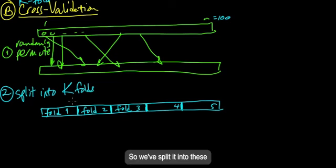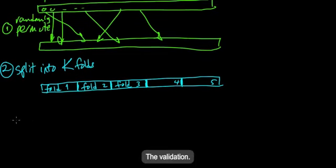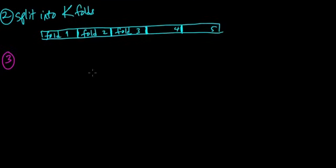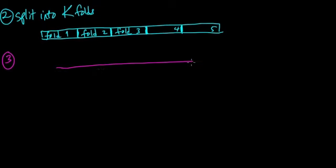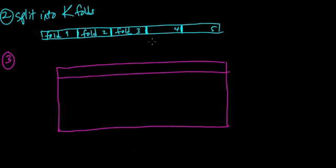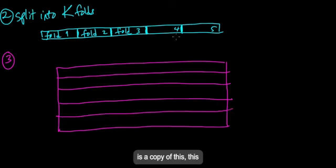And this is called fold one. This one is fold two, fold three, fold four, and fold five. So each fold is a subset of 20 points. In this little example where N is 100 and K is five, then each fold has 20 points.